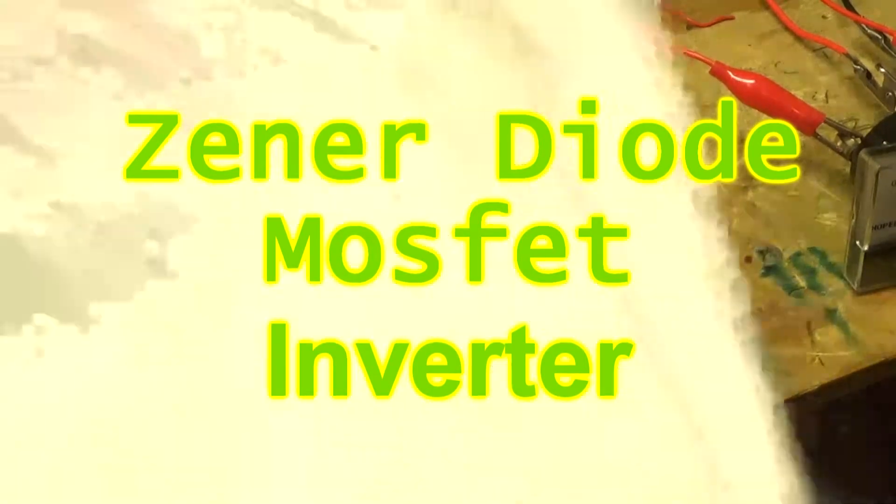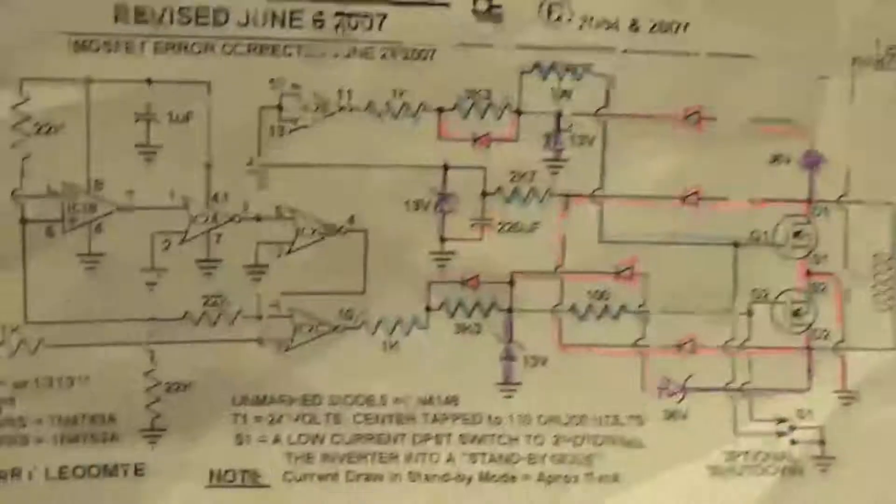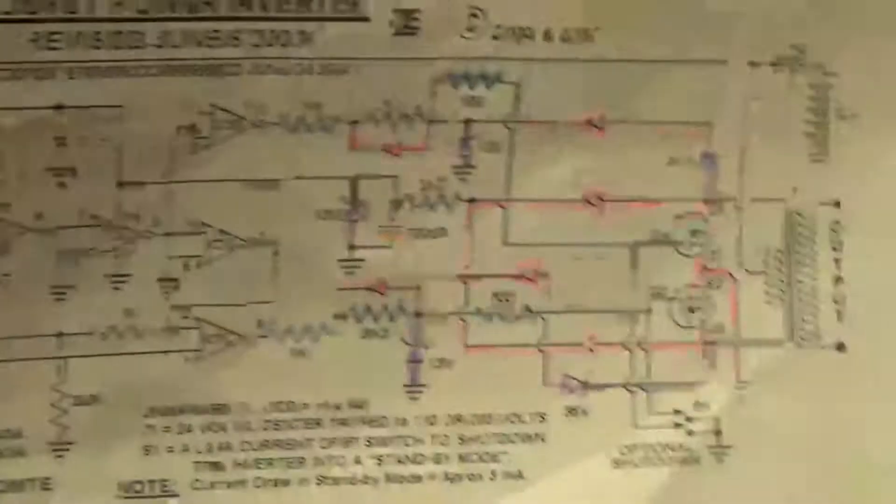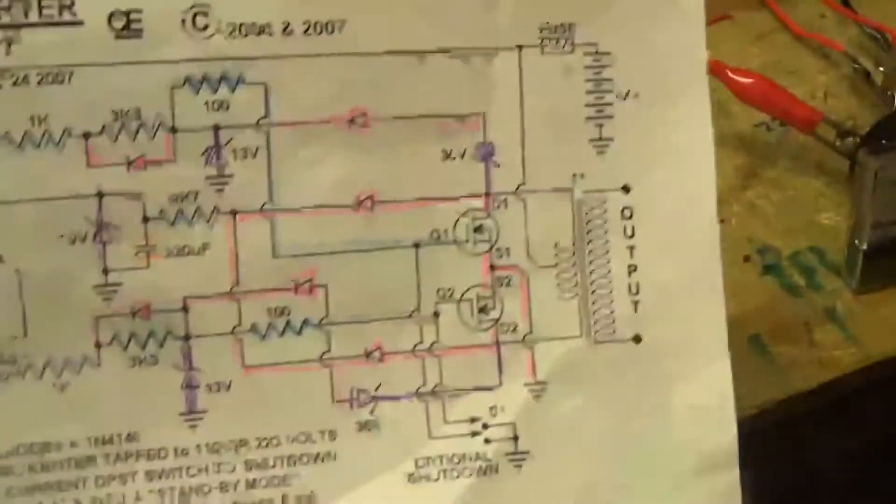What we have here is a circuit you can find online. It's a MOSFET inverter circuit, the one that has all the diodes in there, the 13-volt, 36-volt zener diodes.